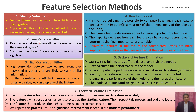The second feature selection method is the low variance filter. Features in a dataset where all observations have the same value, say 1, have zero variance and may not be significant. We may observe that a particular feature has the same value across all observations, making it not very effective since its variance is close to zero. The next method is the high correlation filter. High correlation between two features means they have similar trends and likely carry similar information. If the correlation coefficient crosses a certain threshold value, we can drop one of the features.